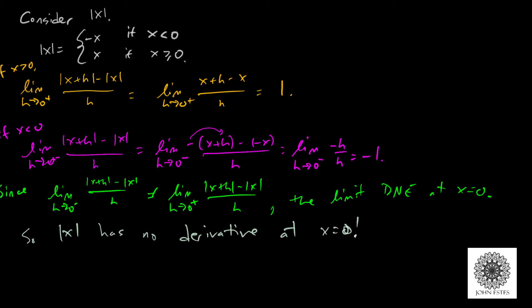Why is that? Well, if you look at the graph, the absolute value of x, you have a v-shape that meets right at 0.